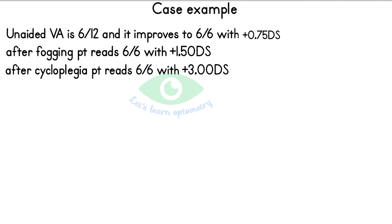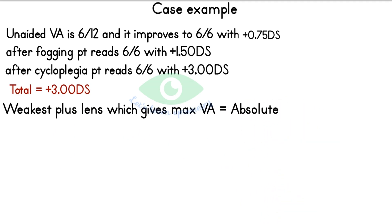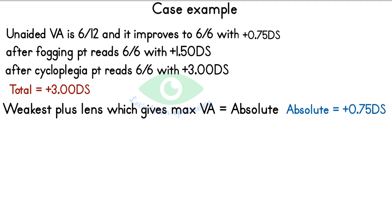Total hypermetropia is detected after complete cycloplegic refraction. Here the cycloplegic refraction value is +3.0 D spherical, so total hypermetropia is +3.0 D. The visual acuity improves from 6/12 to 6/6 with +0.75 D spherical. The weakest plus lens which gives maximum visual acuity is the absolute component, so absolute hypermetropia is +0.75 D spherical.